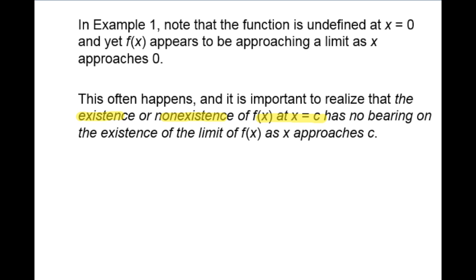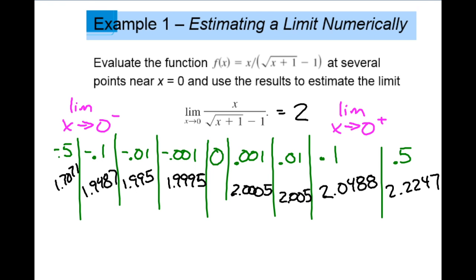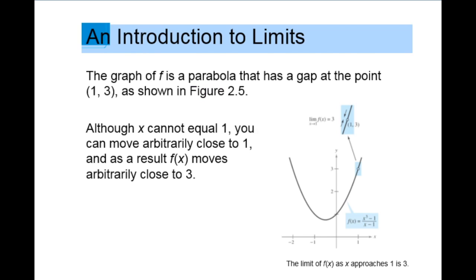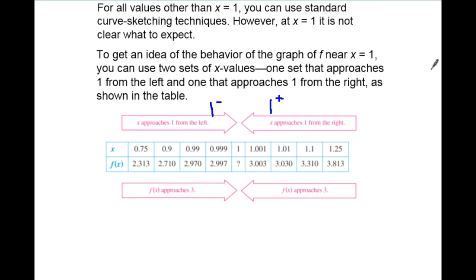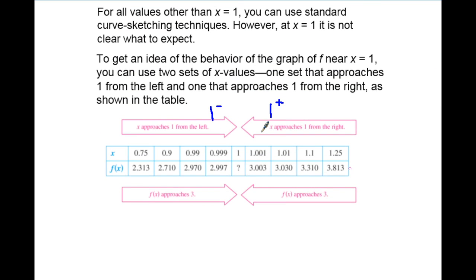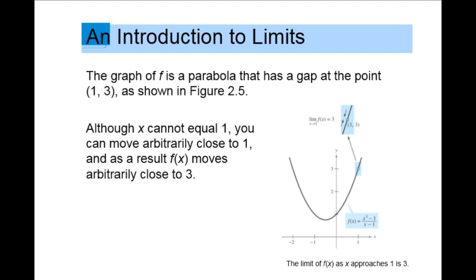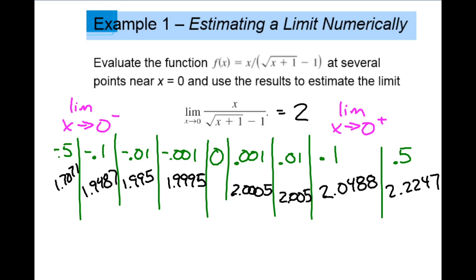It approached two from this side and two from that side. In the other example, it approached three from this side and three from that side. That was great because it allows us to calculate the limit.